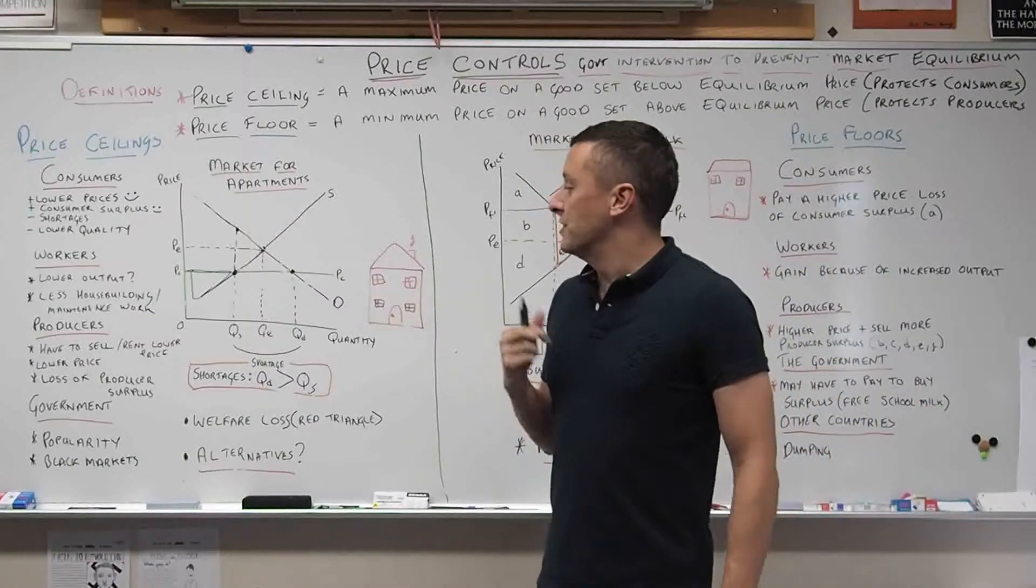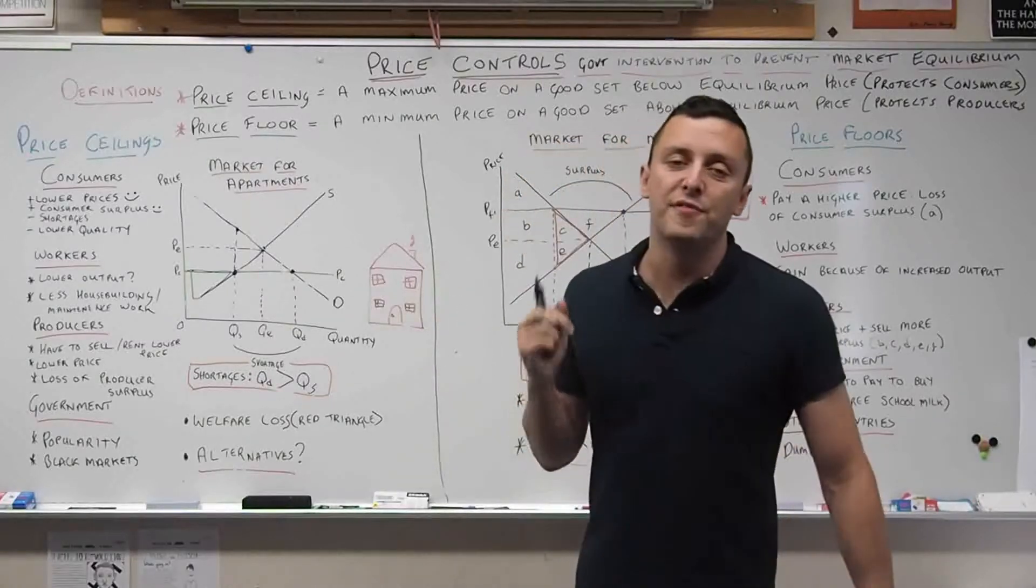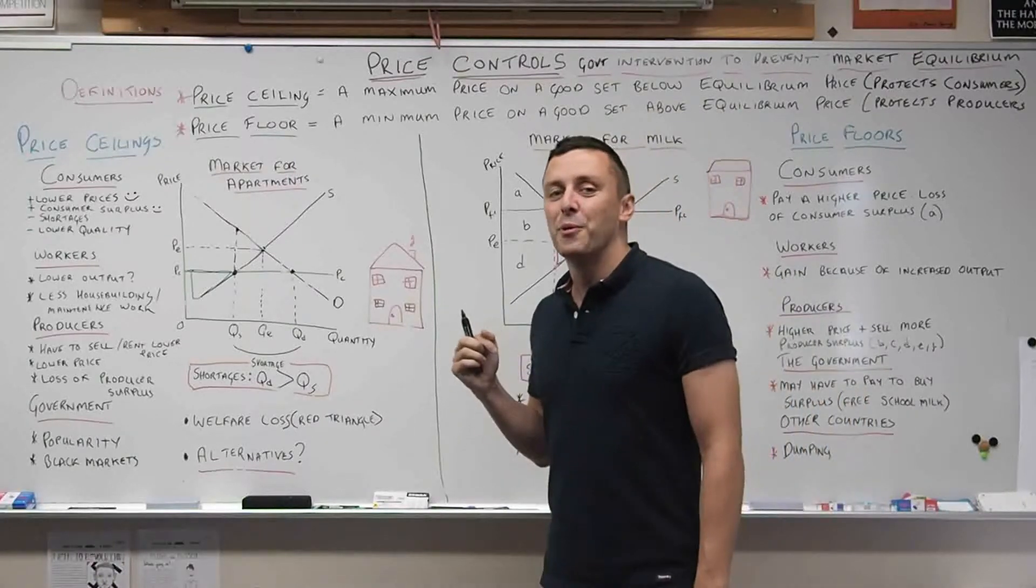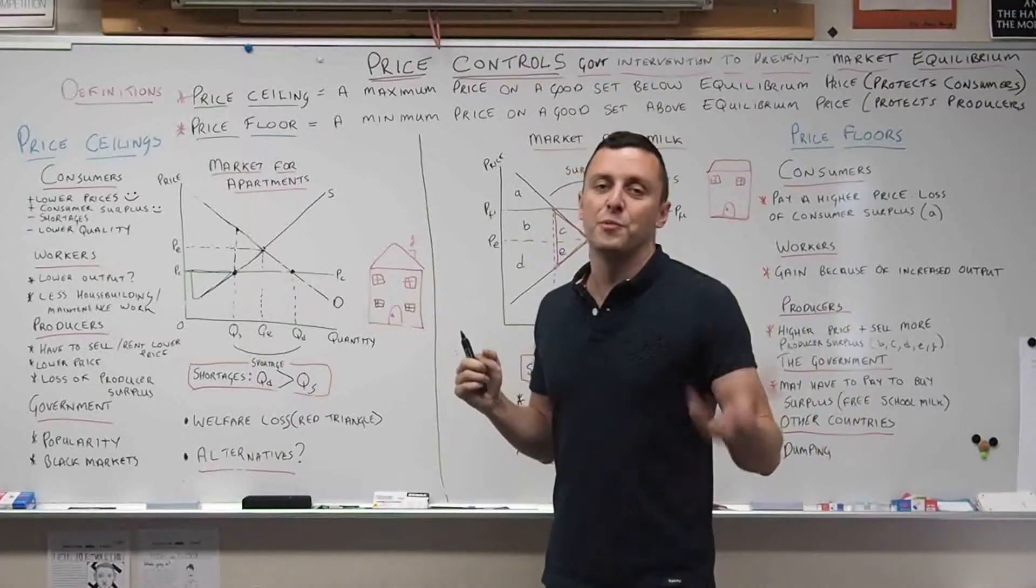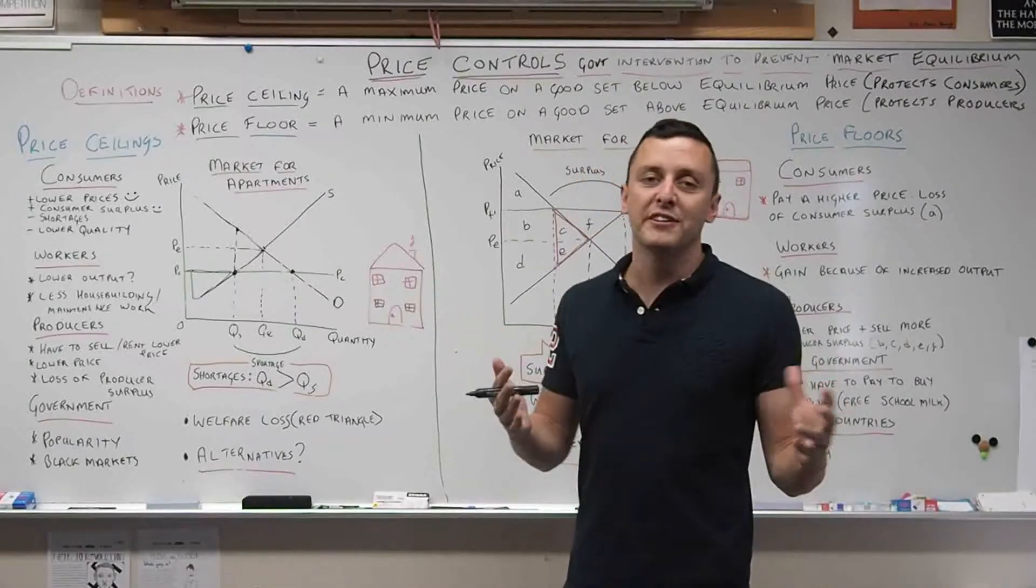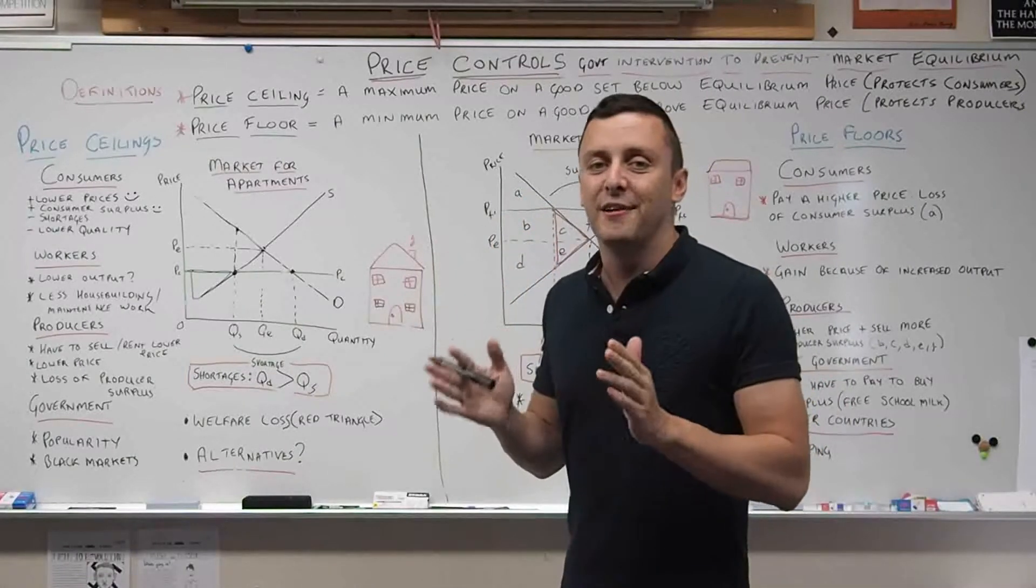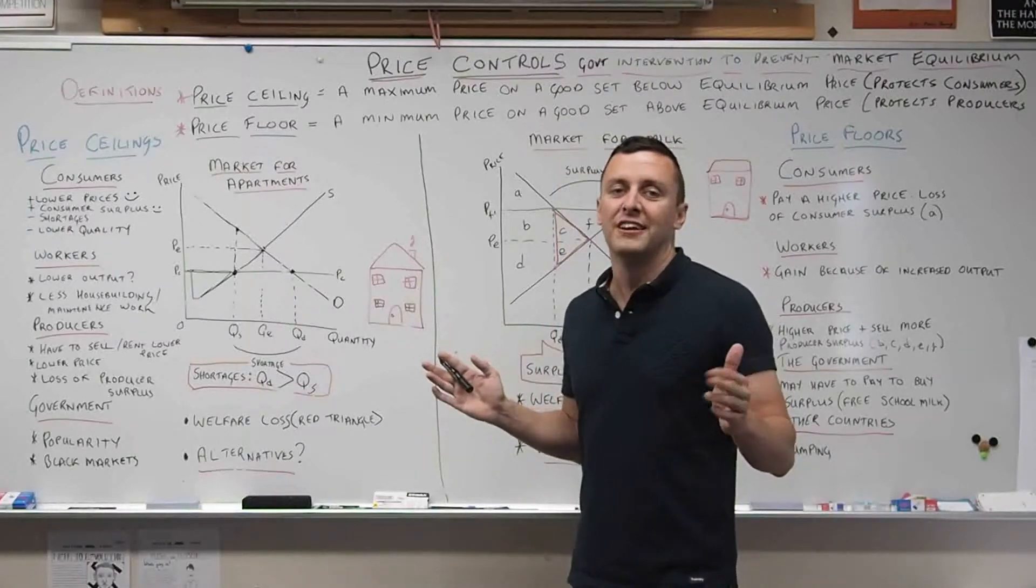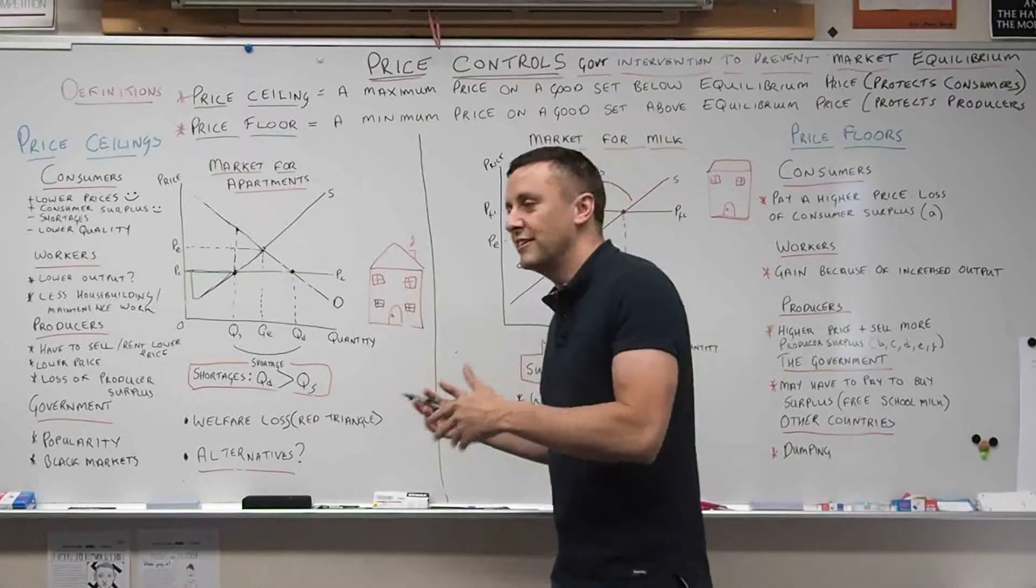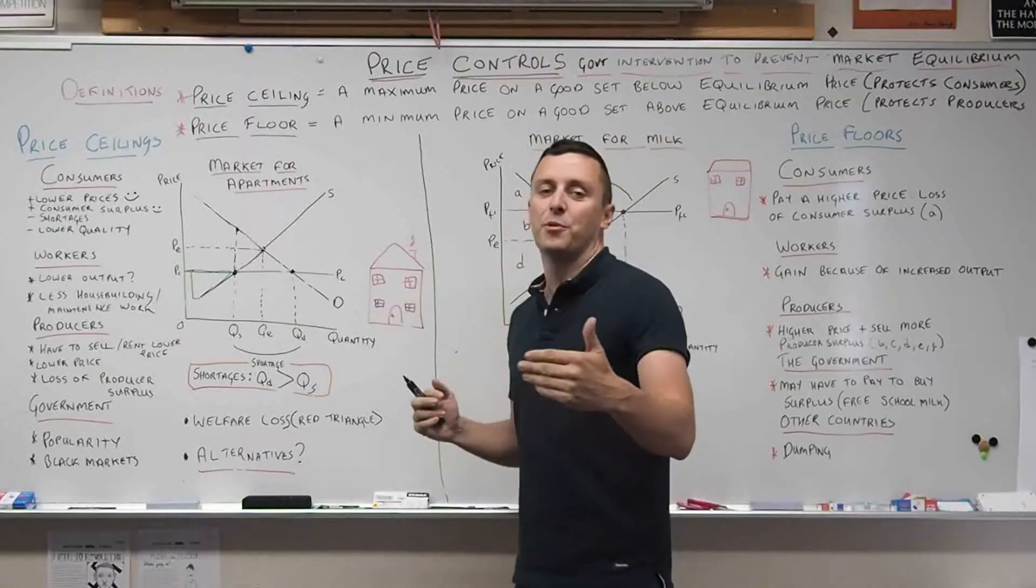The last group to think about is the government. Price controls are a very popular policy. Most consumers support it - who wouldn't support lower prices? For example, in Venezuela, Chavez promised very tight price controls on a whole range of goods that increased his popularity. And in the UK right now, many people in the Labour Party support rent controls in London, again increasing their popularity.